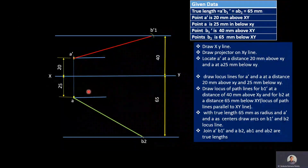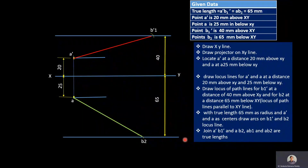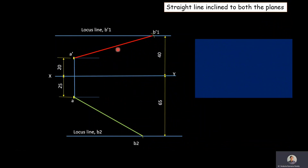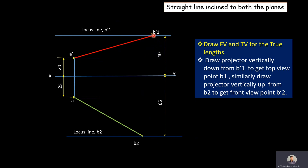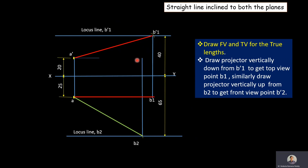A'B1' and AB2 are the true lengths. After drawing true lengths in front view and top view, we draw the corresponding top and front views. At B1', draw a projector vertically downward. At A, draw a line parallel to XY line; that line cuts the projector at B1. This gives the top view AB1. Then at B2, draw a projector vertically upward. At A', draw a line parallel to XY line; that line cuts the projector at B2'. This gives the front view AB2'.